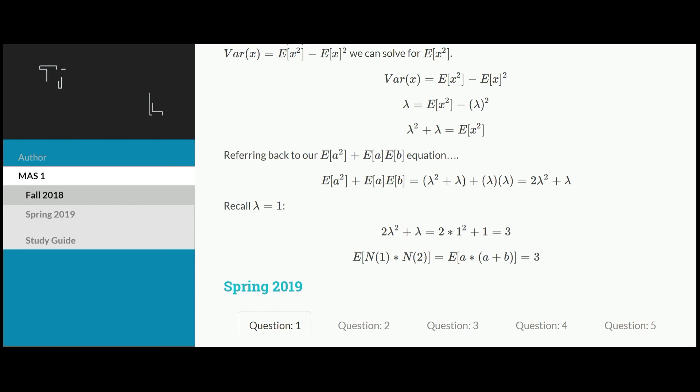Now we can jump back to this equation and plug that in. We know that equals lambda squared plus lambda. Then we know the expected value of A is lambda, as well as the expected value of B is lambda. That simplifies to 2 lambda squared plus lambda. At this point, all we have to do is remember that in the problem, we were given that lambda equals 1. We can just plug that in and get the answer of 3.